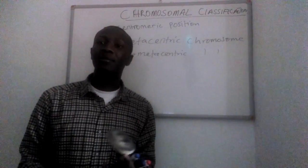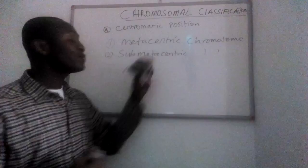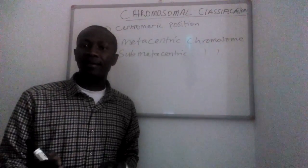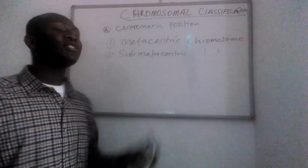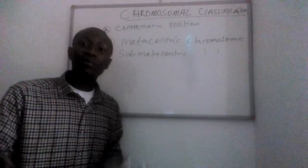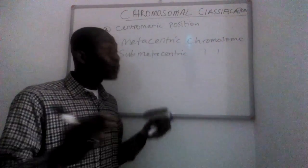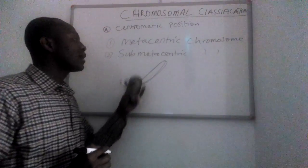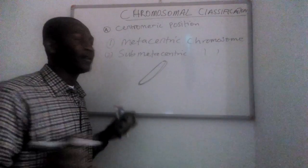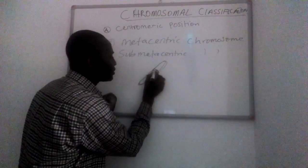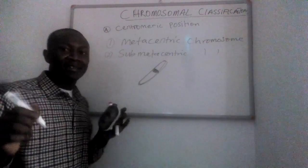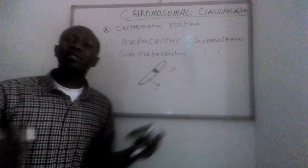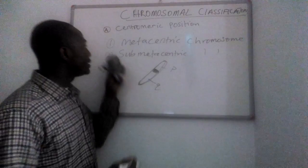The second one is the sub-metacentric chromosome. In metacentric chromosomes the arms are equal lengths, but in sub-metacentric chromosomes the two arms are not exactly equal — one of the arms is a little bit longer than the other. There are differences between the Q arm and the P arm, but the difference is not too much. We put the centromeric position slightly off-center so that one arm becomes the longer Q arm and the other the shorter P arm. If a chromosome appears like that, we call it a sub-metacentric chromosome.